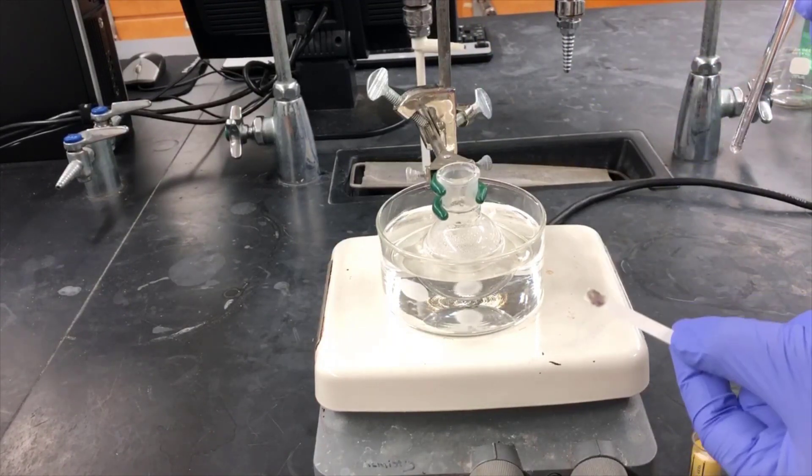The dark color we're observing here indicates that hypochlorous acid is still present, so we'll need to quench that, destroy that reagent before we move on to the distillation.